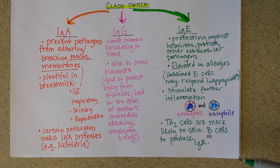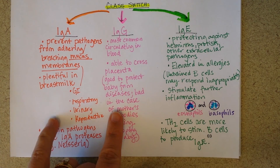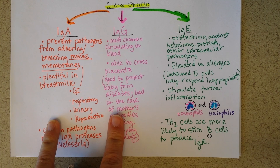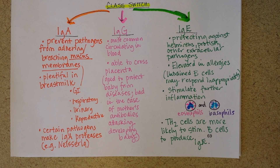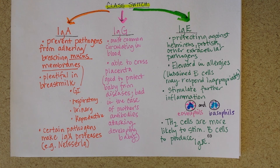There are different kinds of helper T cells. If a TH1 cell stimulates a B cell to make antibodies, it's more likely to make IgG or IgA. If a TH2 cell stimulates a B cell to make antibodies, we get more IgE. That's why in allergenic profiles we sometimes find an imbalance of TH2 activity relative to TH1.